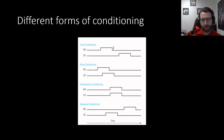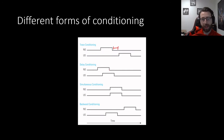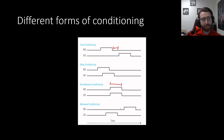The first is trace conditioning, in which there is a stimulus-free interval of time between the offset of the neutral stimulus and the onset of the unconditioned stimulus during training. Delay conditioning is where they overlap — the neutral stimulus still precedes the unconditioned stimulus, but they overlap. Simultaneous conditioning is where both occur at the same time. And backward conditioning is when the unconditioned stimulus actually precedes the neutral stimulus.